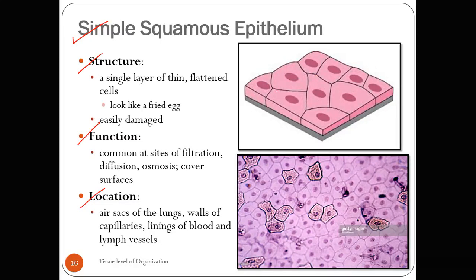When drawing the structure of any tissue, make sure whatever you draw coincides with your written description. If you say flattened cells, the drawing should also show flattened cells — not columnar cells. The structure of simple squamous epithelium: from the name itself, simple means single layer and squamous means flattened, so it is a single layer of thin flattened cells.